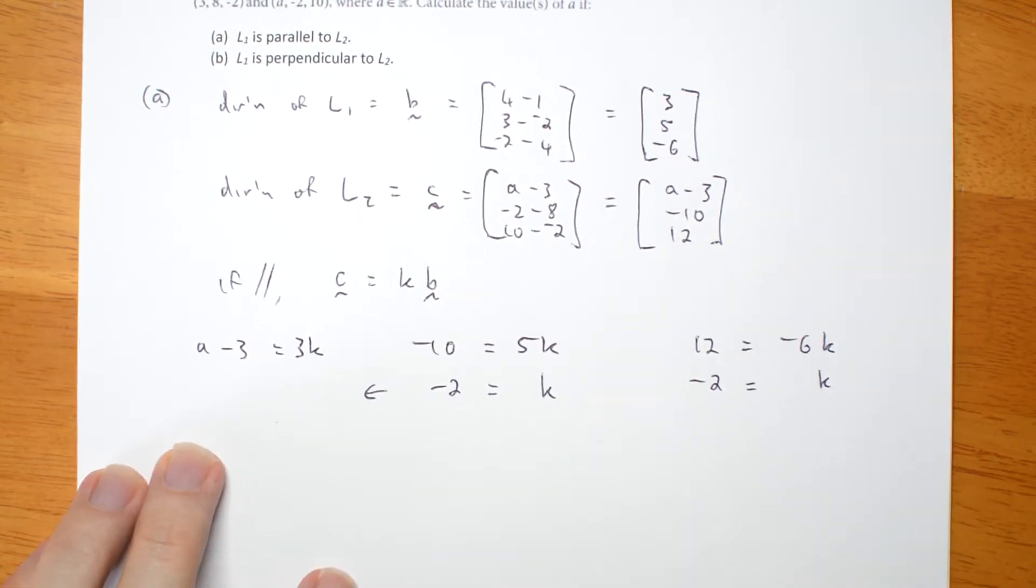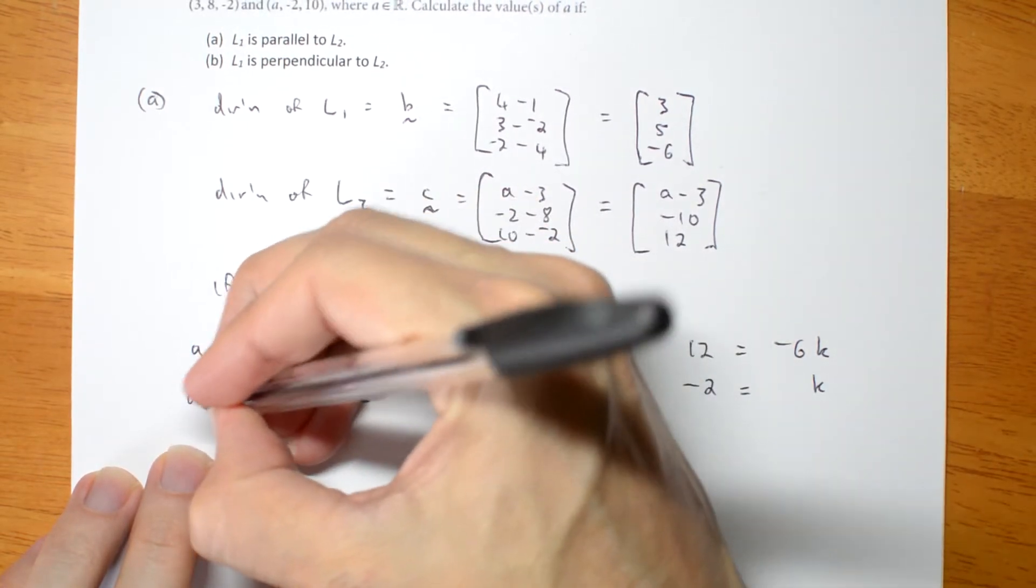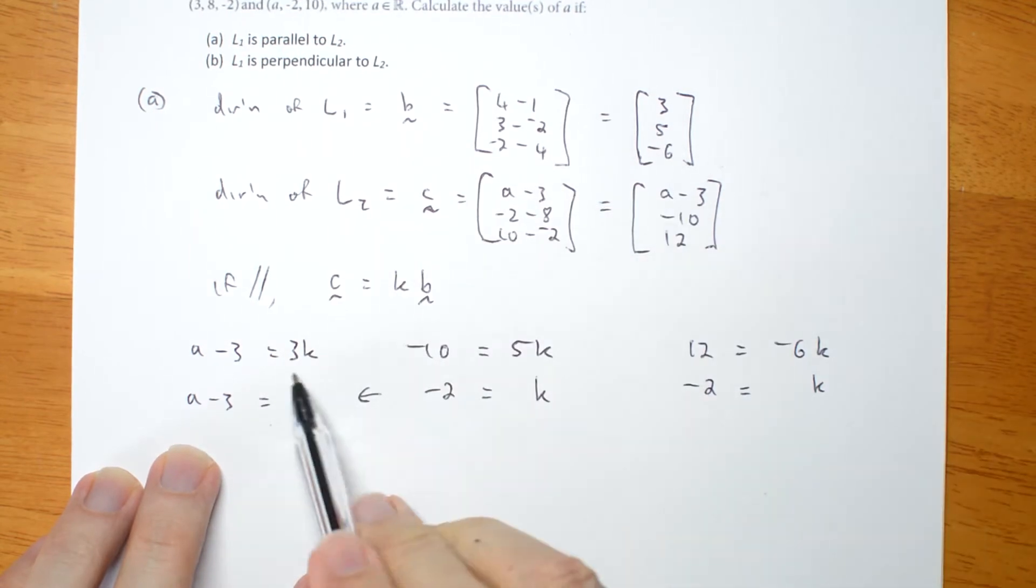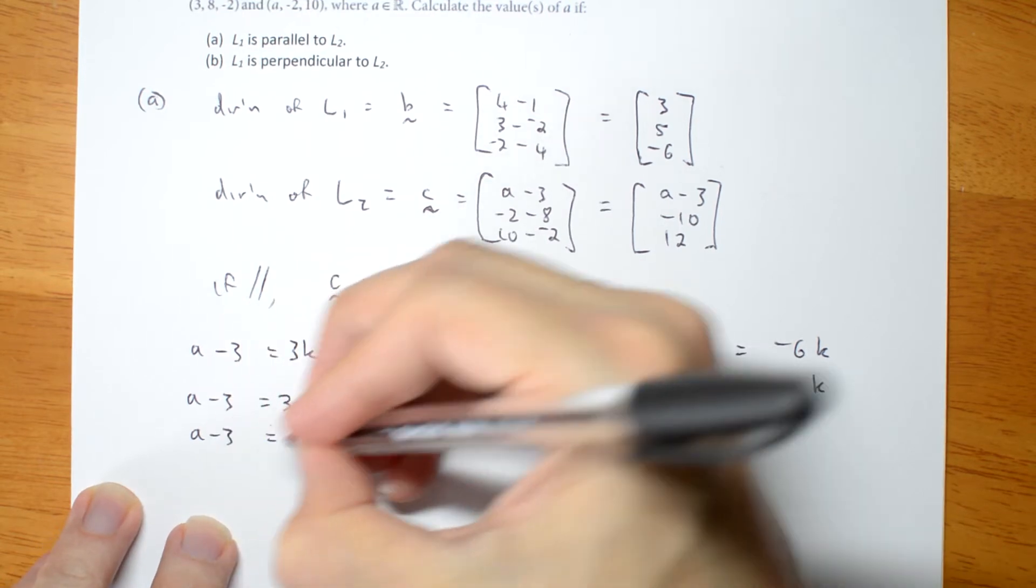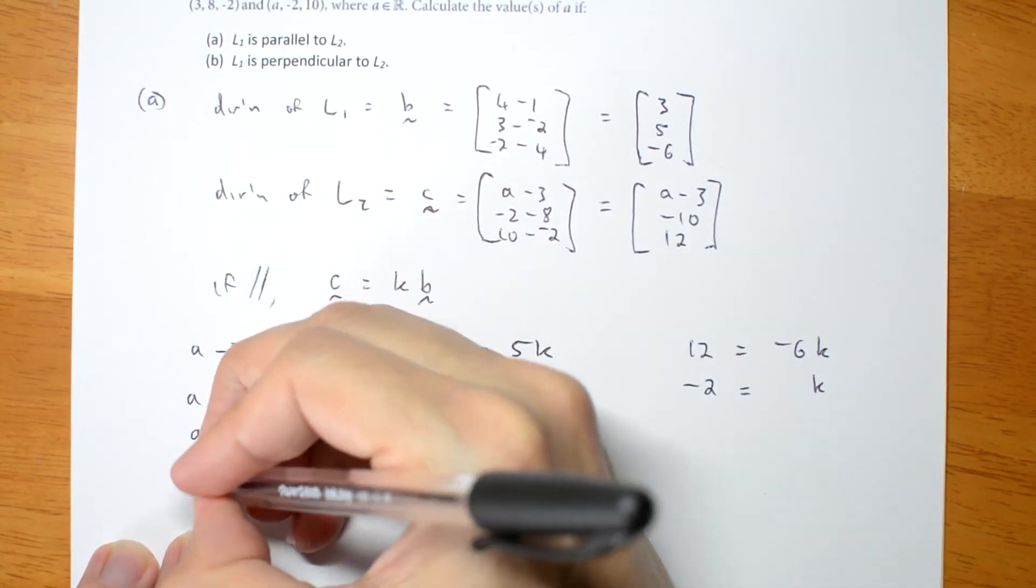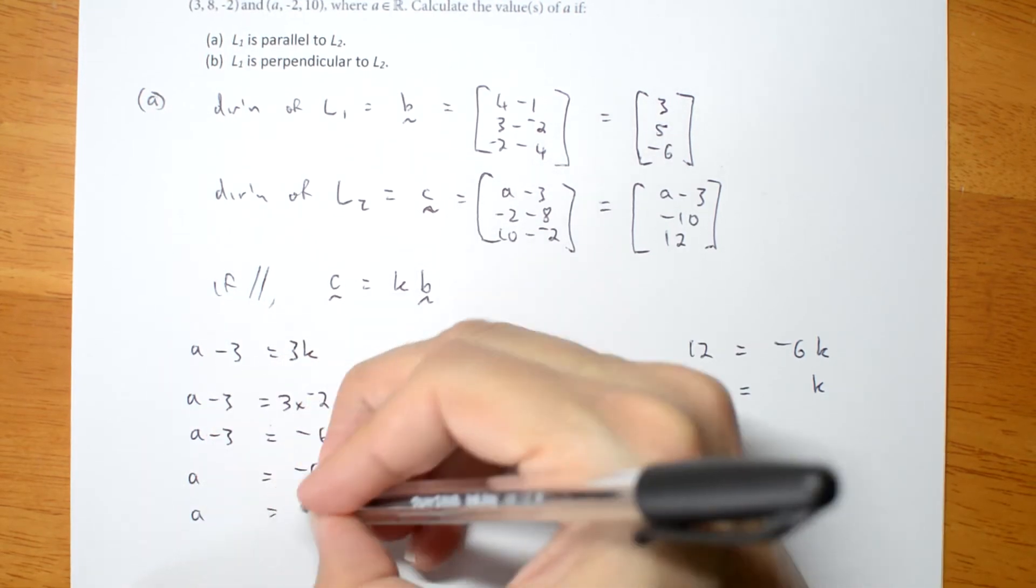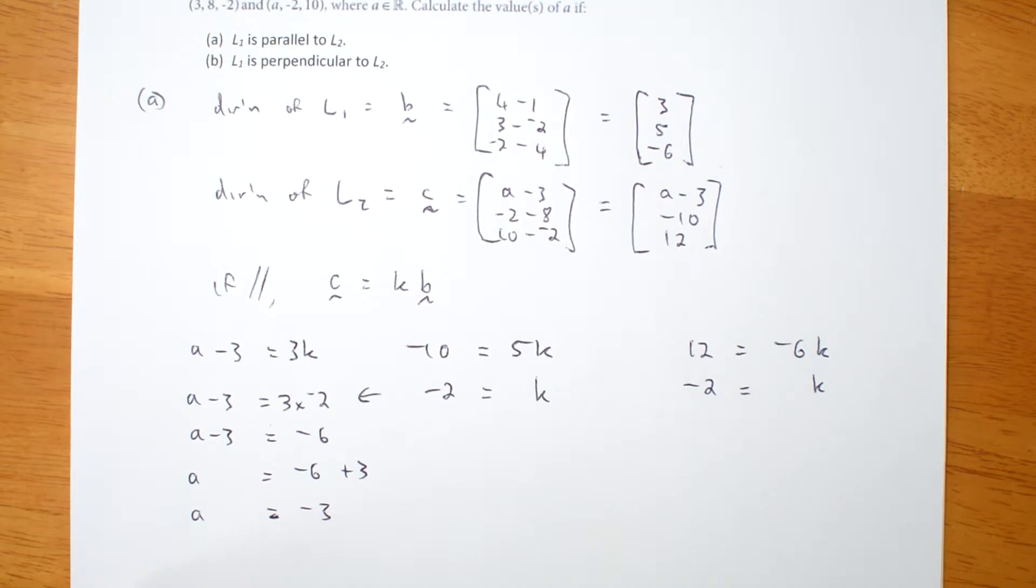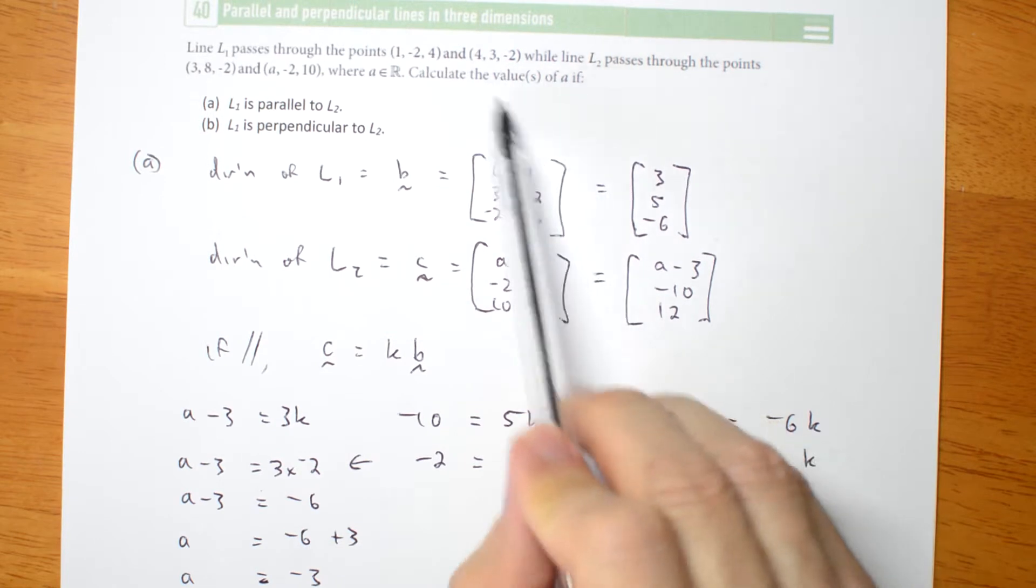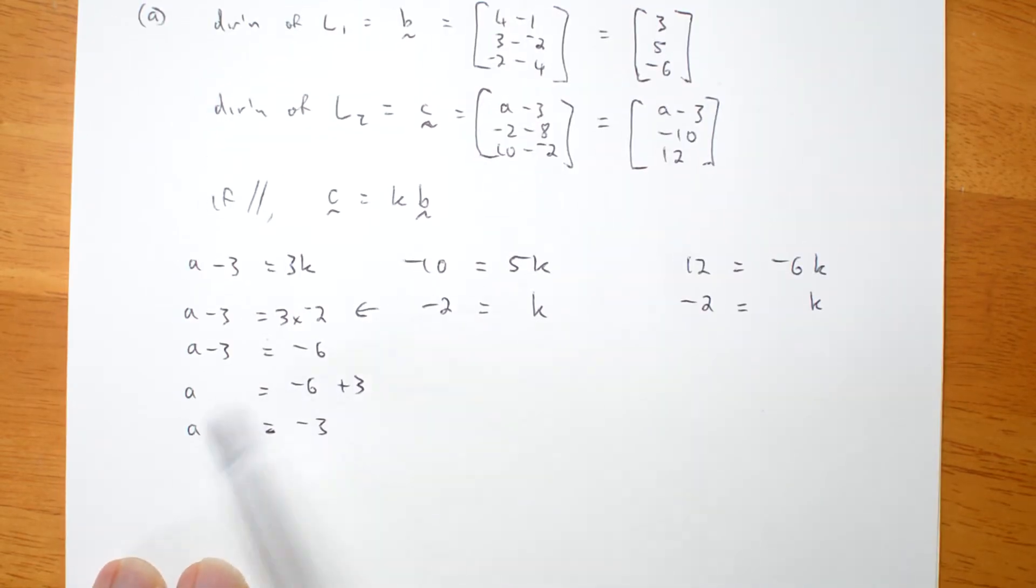If I plug that value for K in here, I'm going to get A minus 3, 3 times negative 2. A minus 3 is negative 6. A is negative 6 plus 3. A must be negative 3. Notice there was no possibility for A to be anything else here. Although the question asked for value or values, there's actually only one value that can work.